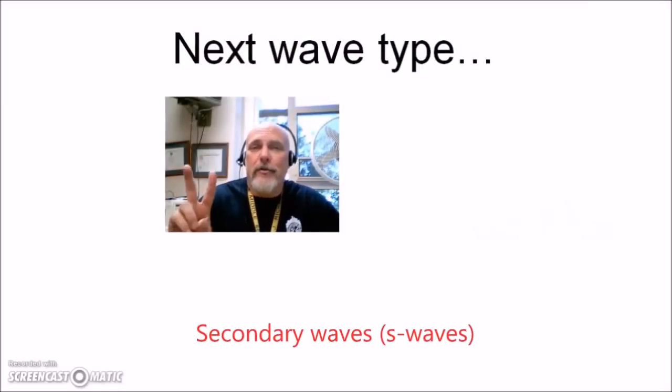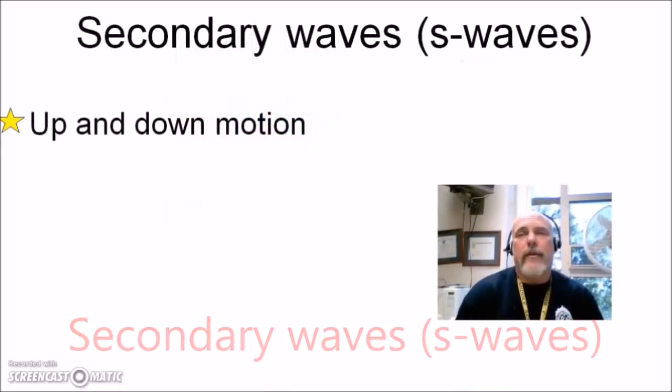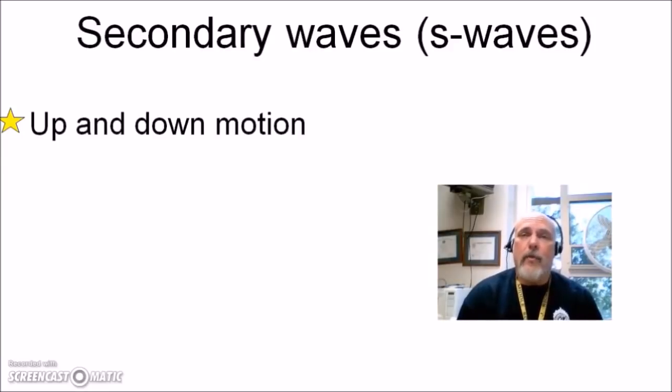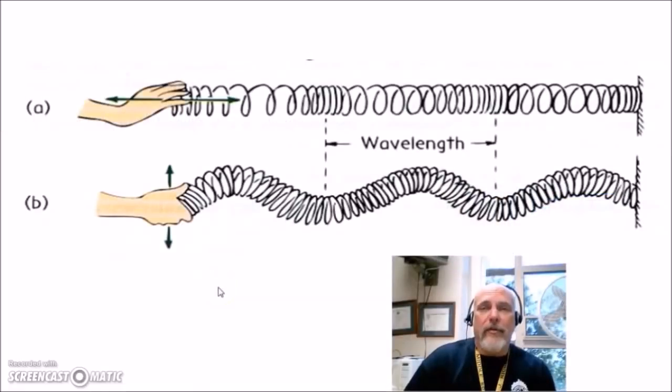Next wave type, number two, is secondary waves, sometimes called S waves. Secondary waves are characterized by an up and down motion, whereas P waves were a back and forth motion. S waves are going to be more of what you normally think of with waves, with that up and down motion. And going back to our friend the slinky, this would be a P wave, a back and forth motion, and an S wave would be taking the same slinky and snapping it up and watching the wave travel through the slinky like this.